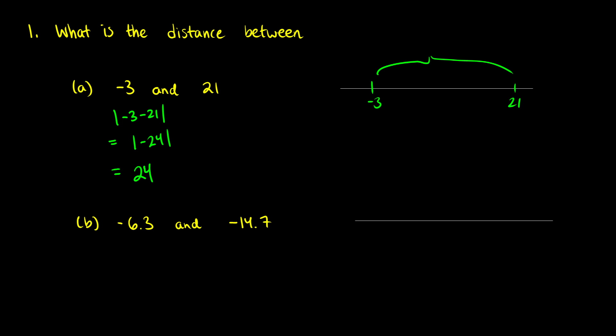So negative 3 is 24 units away from 21. If we were to do 21 minus negative 3 to show this with this example, we would get 21 plus 3, which is the same thing as the absolute value of 24, which just gives us an output of 24.